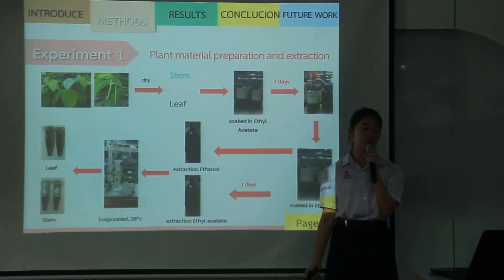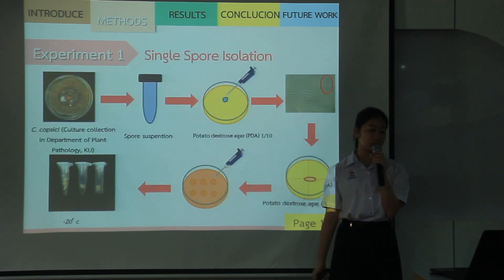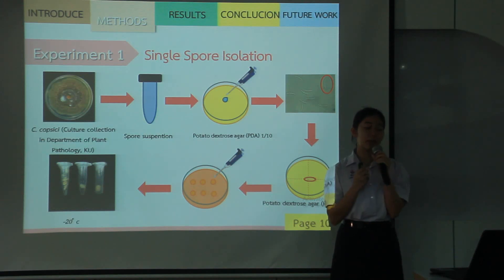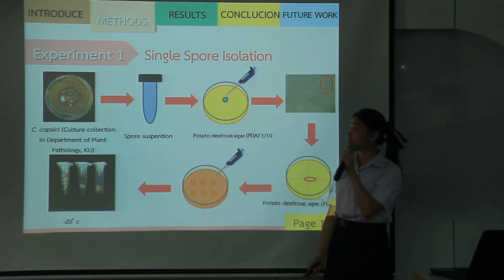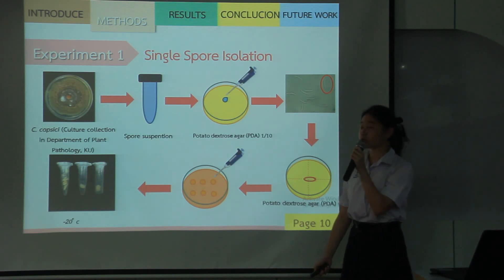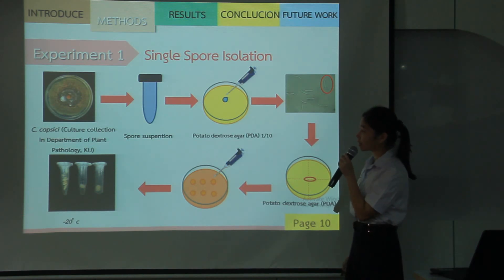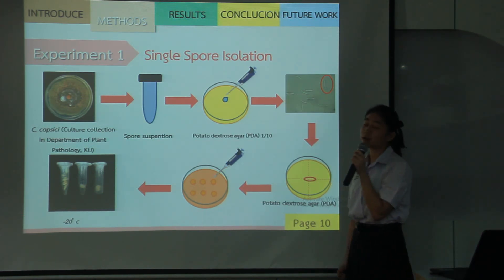Next is the main methodology. The first step is material preparation and extraction. Next is fungal isolation: first, make a spore suspension and then drop the spore suspension on 10⁻⁴ dilution PDA. After that, cut the fungal isolate under a microscope and put it on PDA. Then drop the spore suspension on paper discs and keep at minus 20 degrees Celsius.